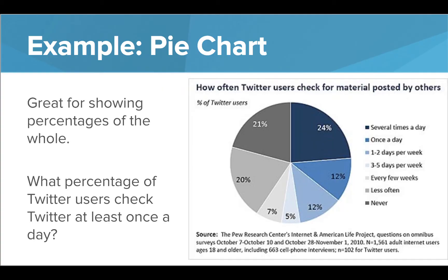Pie charts are a good choice when a percentage can be useful in interpreting the data. We don't have the exact value here, but that might not be what we're trying to display. This pie chart shows how often Twitter users check their feed. If I were to ask you how many check once a day, you could use the chart to figure that out — it looks like about 12% of Twitter users check their Twitter once a day. Either way, 12% of that group will probably check their Twitter feed once a day.